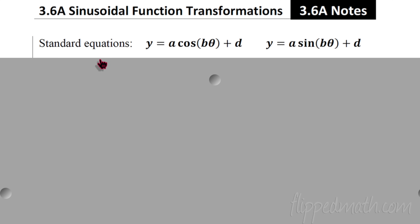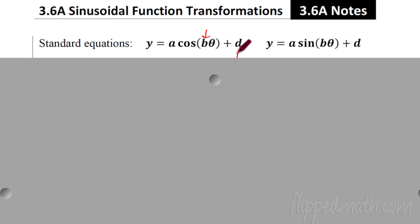The standard equations. We looked at very simple standard equations last time. We just said y equals a cosine theta or a sine theta, but now we're going to change that value that's in front of the theta — that coefficient right there. What happens when we put a number there? We're going to learn that today. And then lastly, what happens when we throw a number at the end, just a plus two or minus one, something to that effect? That changes the graph as well.